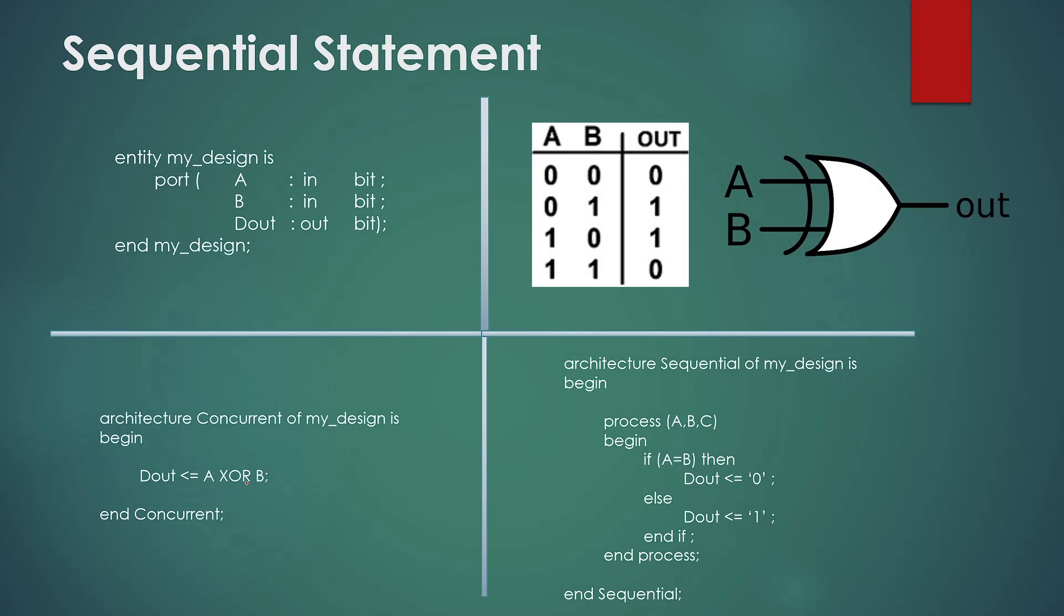Now let's try to understand why we need the sequential statement. We will understand this with the example of this XOR gate. What is XOR gate? So XOR gate will give you the output 0 when both the input A and input B are same, and if these inputs are not same you will get 1 as the output. You can look over the truth table quickly.